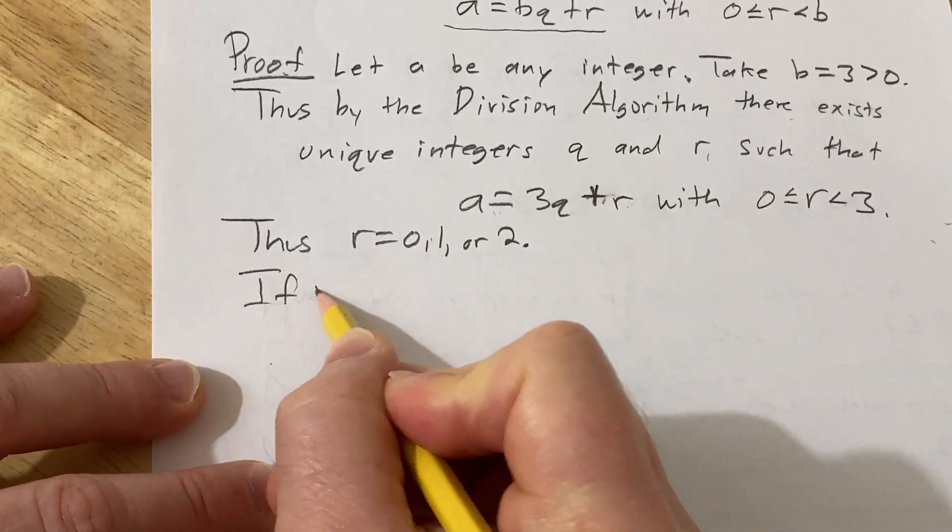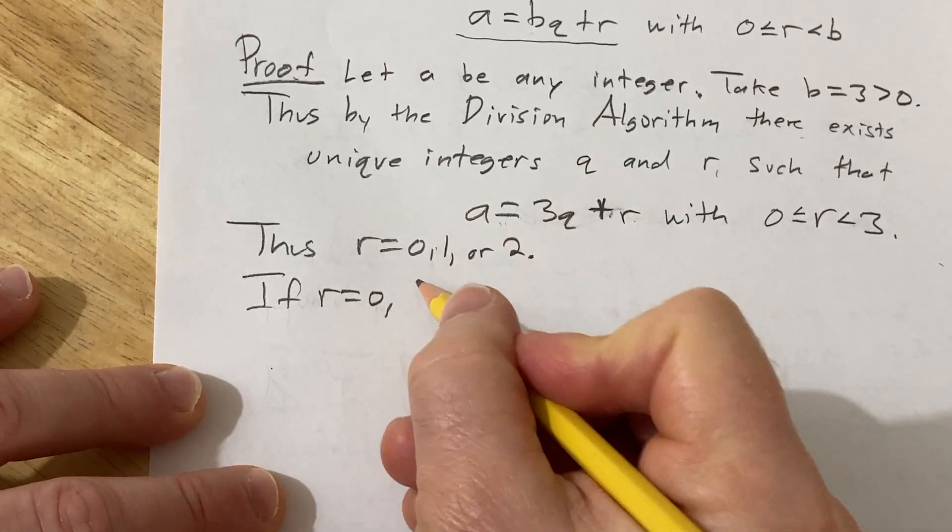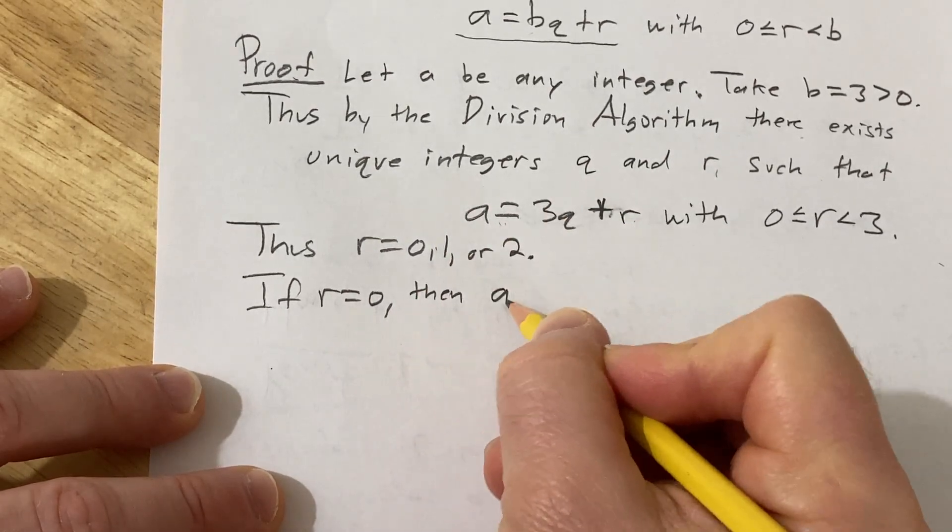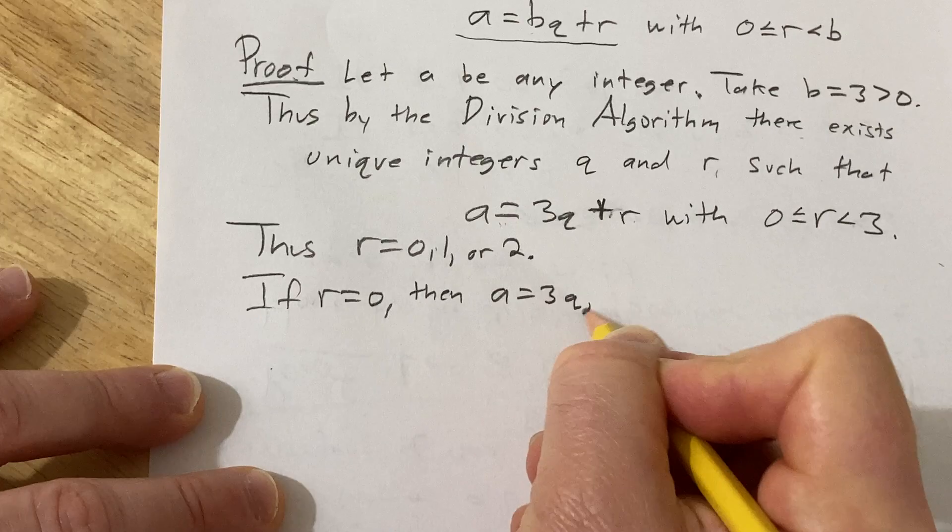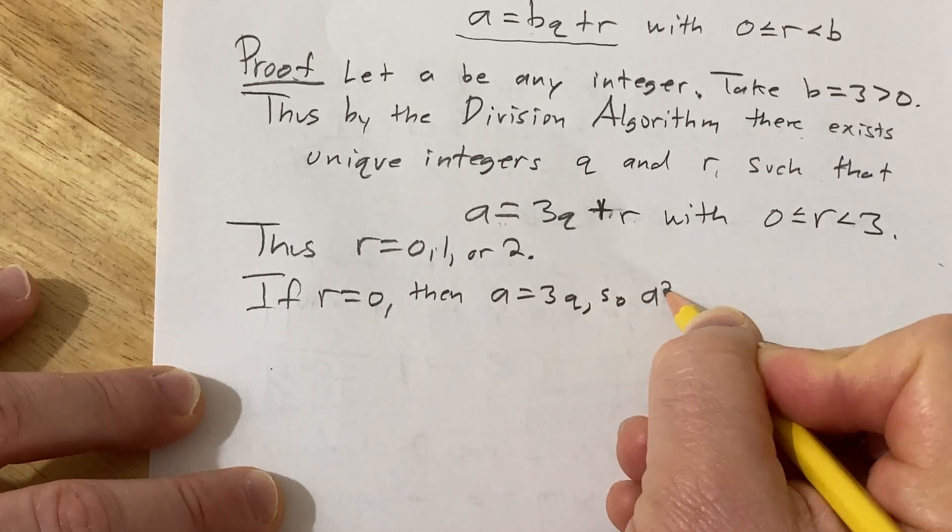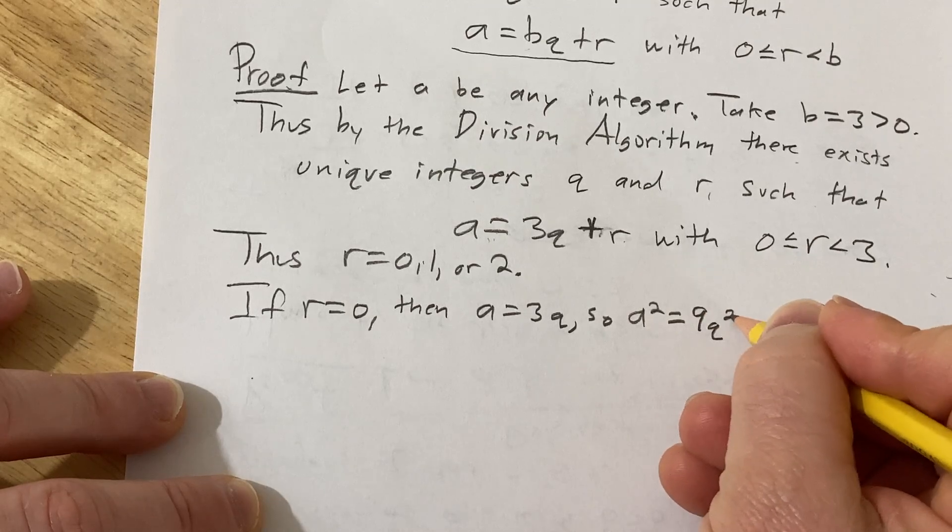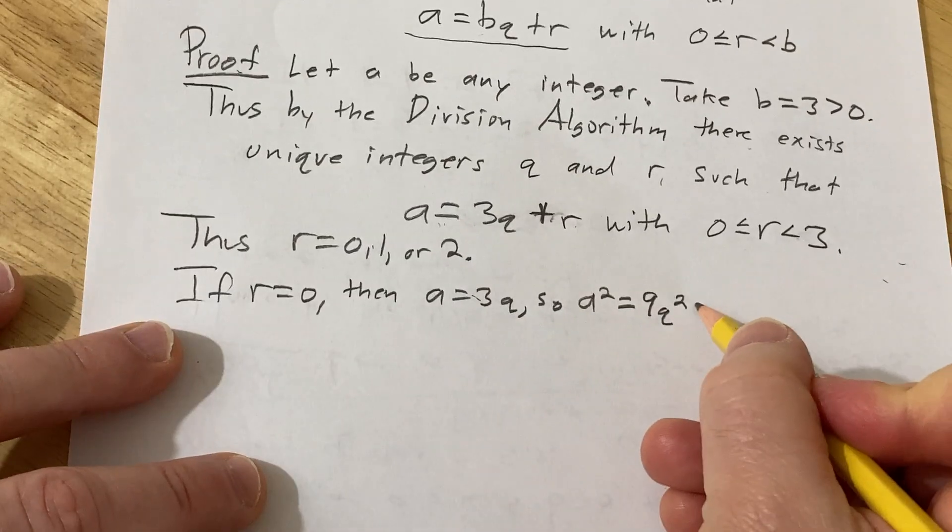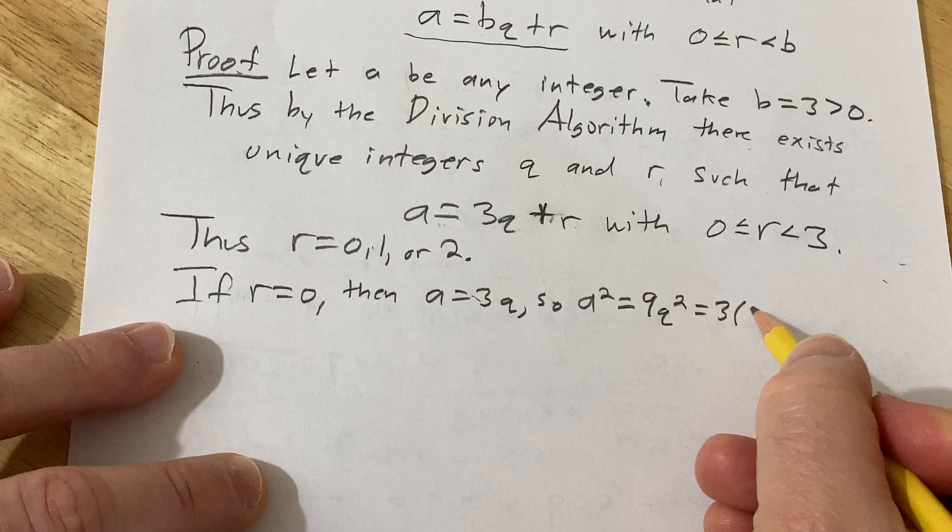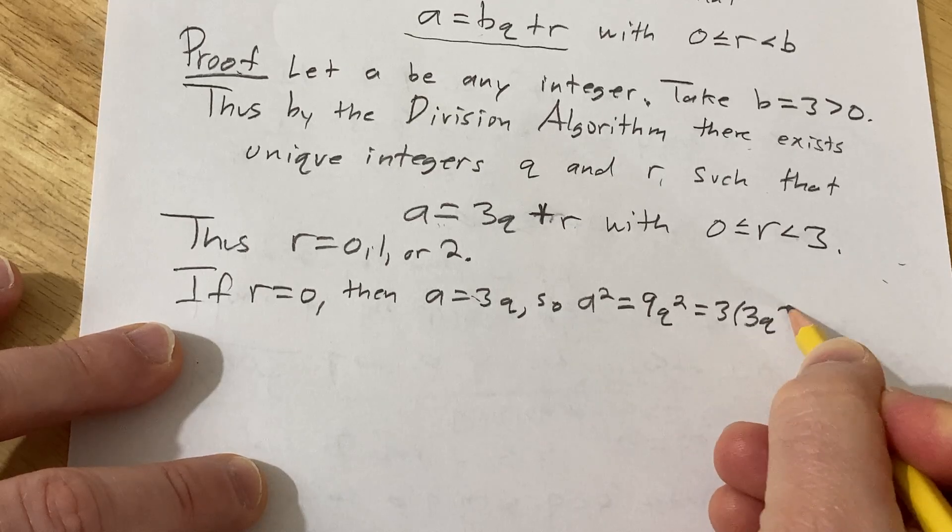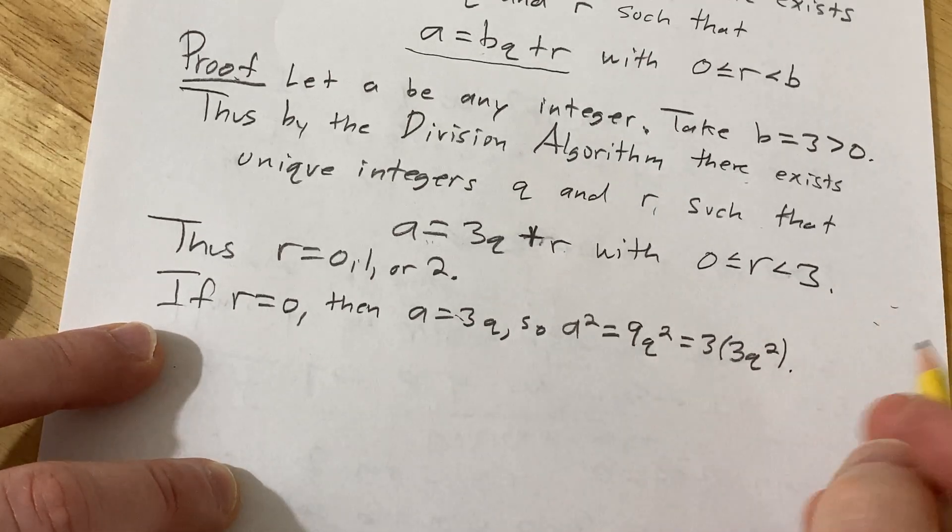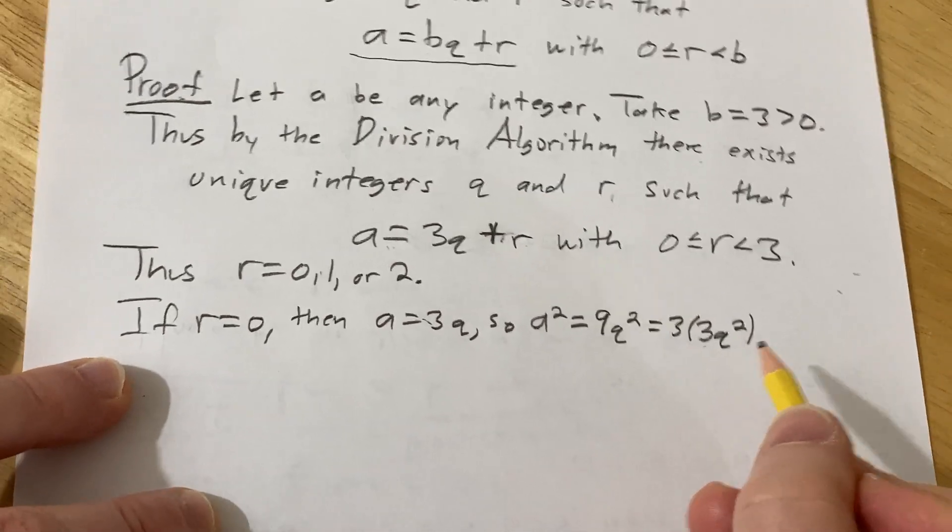If r is 0, then a equals 3q, so a squared equals 9q squared, which is equal to 3 times 3q squared.